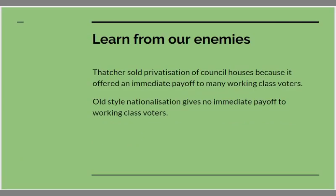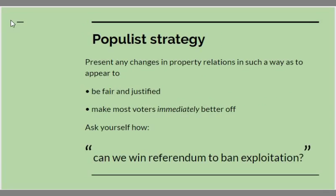We have to learn lessons from the success of Thatcher. Thatcher sold a movement in the reverse direction — privatisation. Privatisation was popularised with the privatisation of council houses, and this had the advantage that it offered an immediate payoff to many working-class voters — an immediate bribe. In that way the Tories were able to cement a majority during which they carried out a whole series of other privatisations. The problem was that old-style nationalisation gave no immediate payoff to the voters. If socialists are to succeed now, they need an unashamedly populist strategy.